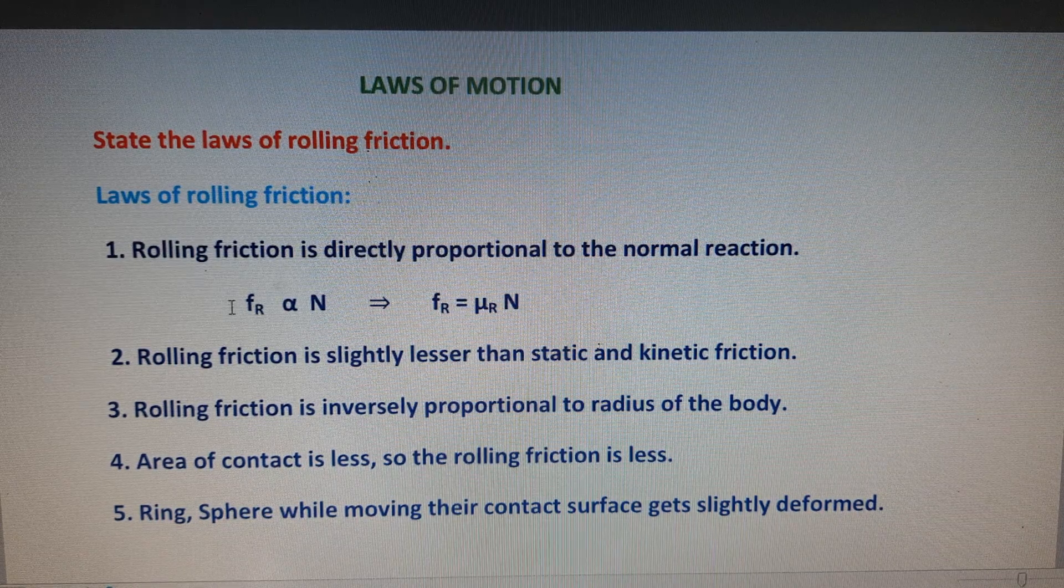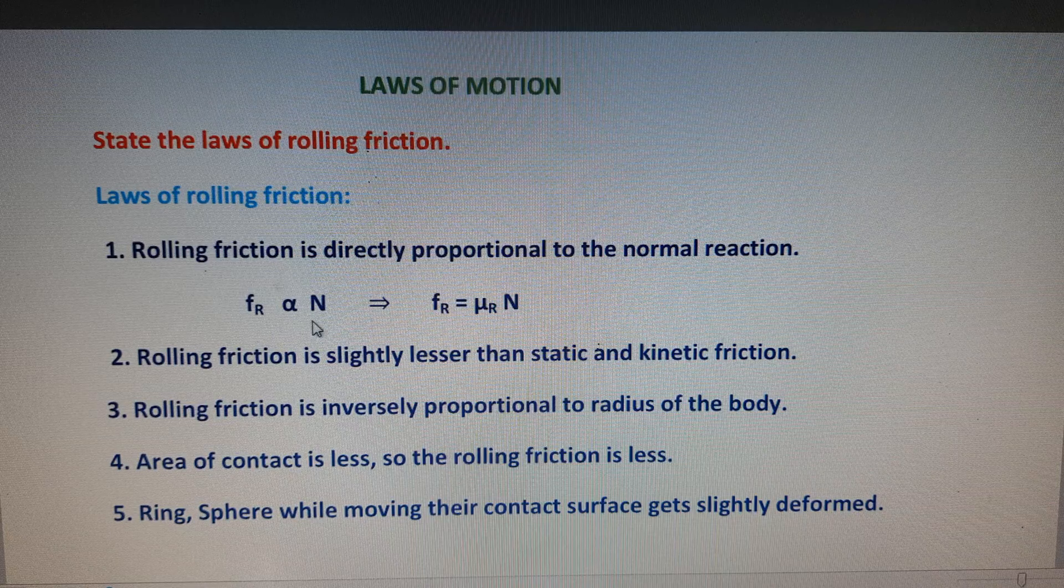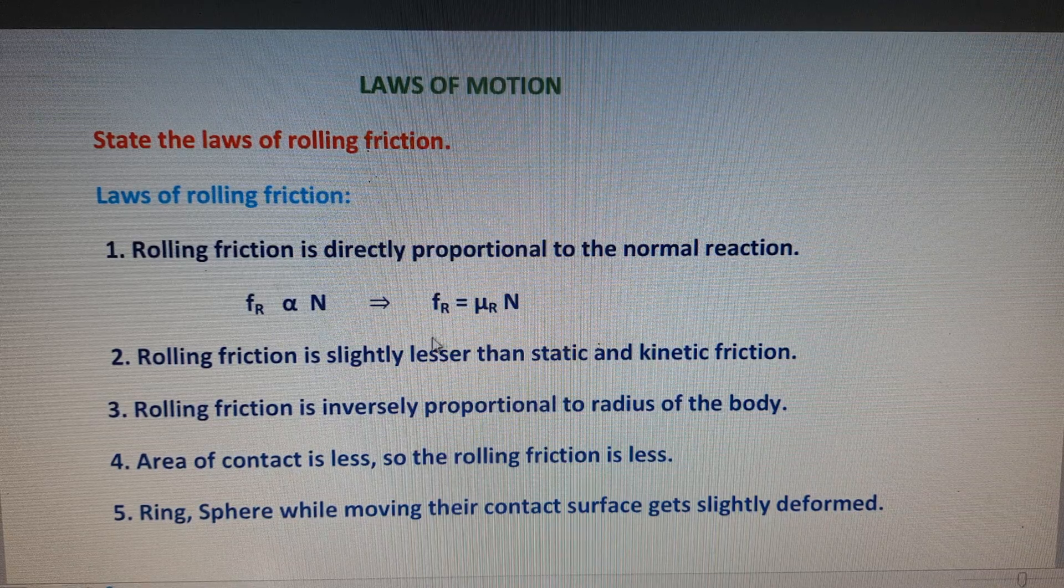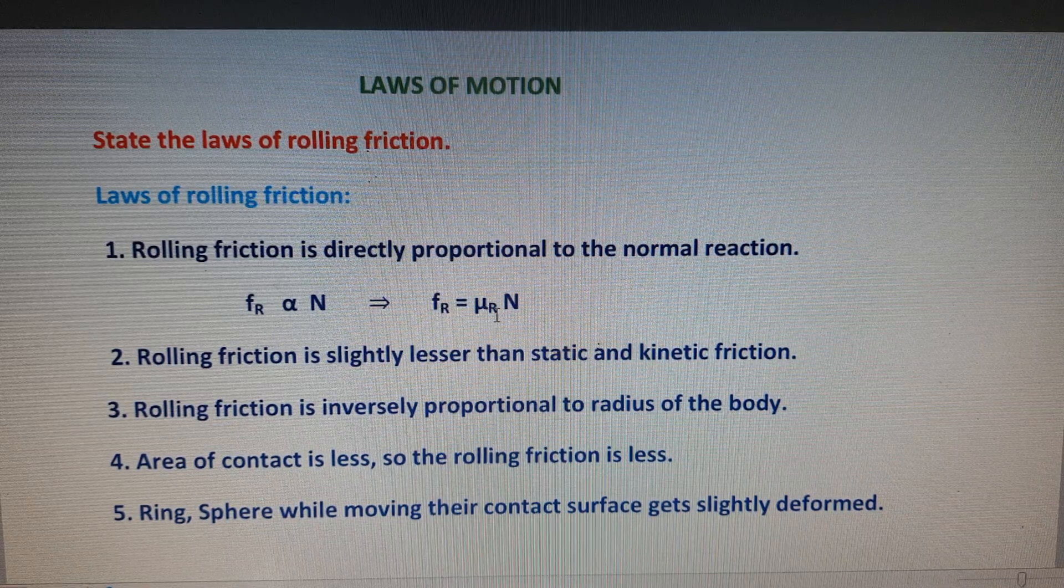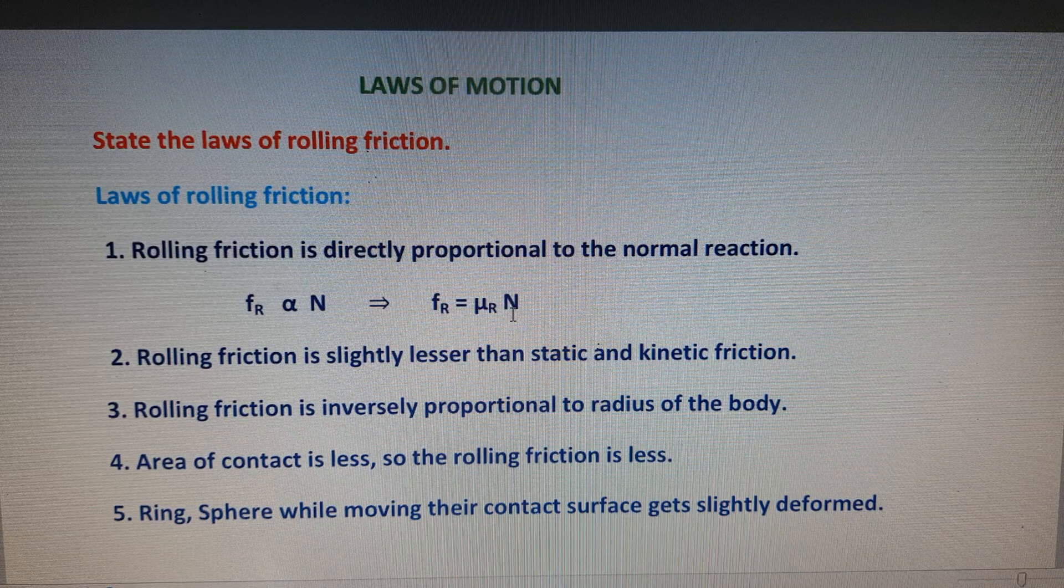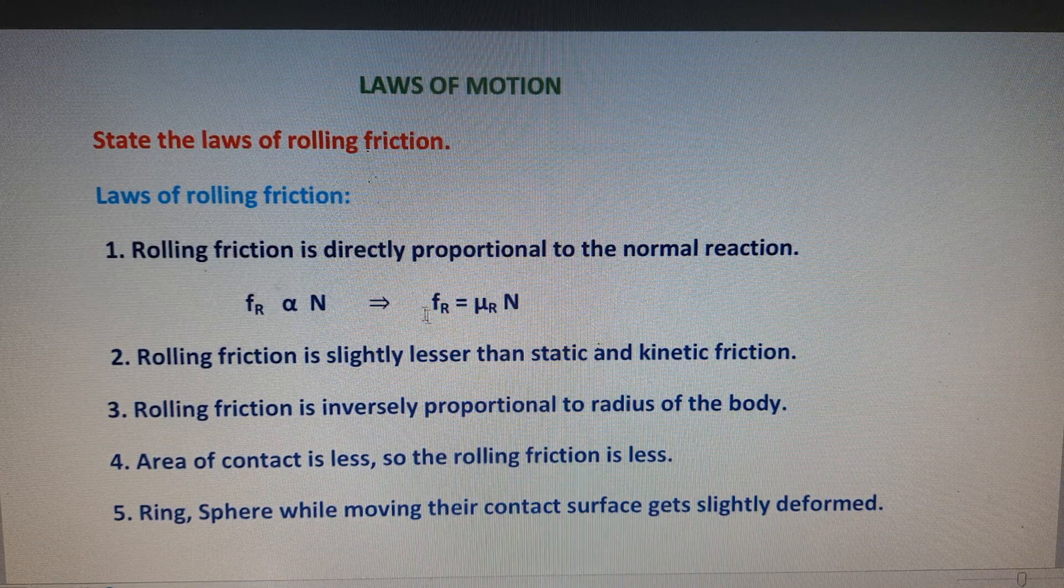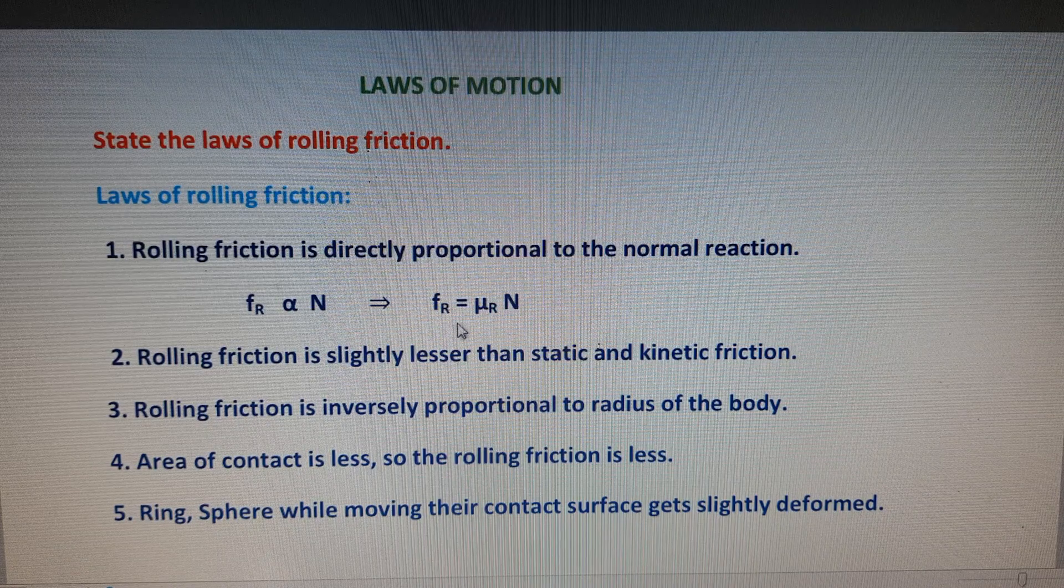So we can write f_R proportional to N. We can write the equation as f_R equals μ_R into N, where N is the normal reaction, f_R is the rolling friction, and μ_R is the coefficient of rolling friction.